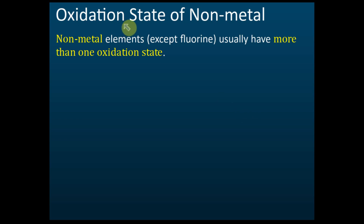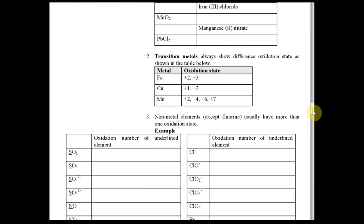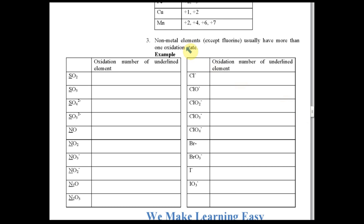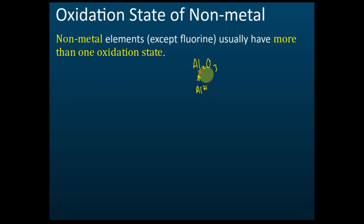This is the oxidation state of non-metals. For metals, we usually know the charge of the metal, and that is the oxidation state. The problem is the oxidation state of non-metals, because non-metals usually have more than one oxidation state.